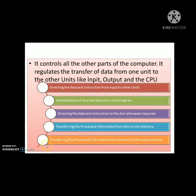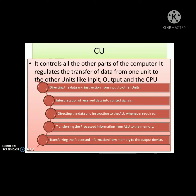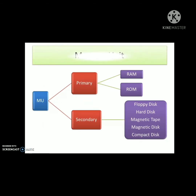Now we need to learn about the control unit. The control unit controls all the other parts of the computer. It regulates the transfer of data from one unit to the other units like input, output, and CPU. The major responsibilities of the control unit are: directing data and instructions from the input unit to other units, interpreting received data into control signals, and directing data and instructions to the ALU whenever required. It also handles transferring processed information from ALU to memory, and from memory to the output device. The transferring of data from one unit to another is a major function of the control unit.